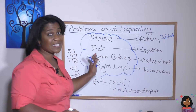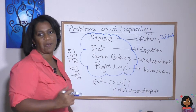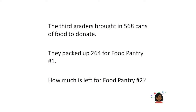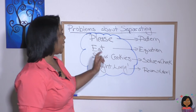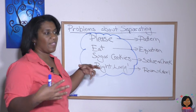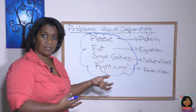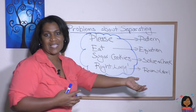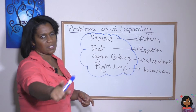Please Eat Sugar Cookies, right? That gives you the structure to know how to solve it. Let's try another one. The third graders brought in 568 cans of food to donate. They packed up 264 for food pantry number one. How much is left for food pantry number two? P stands for pattern — they brought in a certain amount of cans, packed up some, so some went away, and they want to know what remains. That sounds like a subtraction pattern.